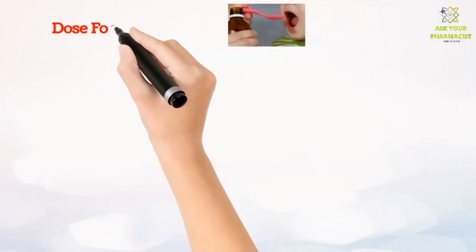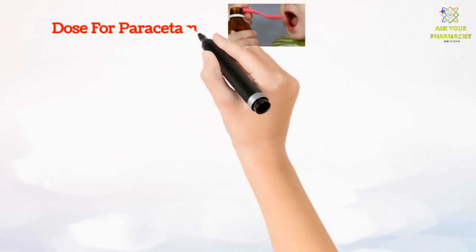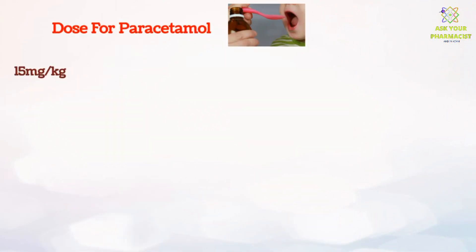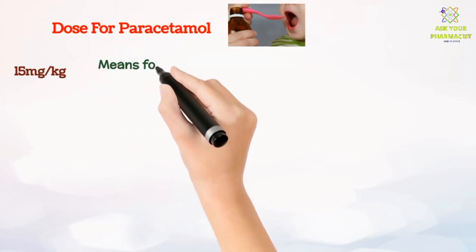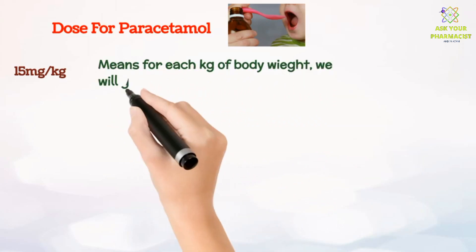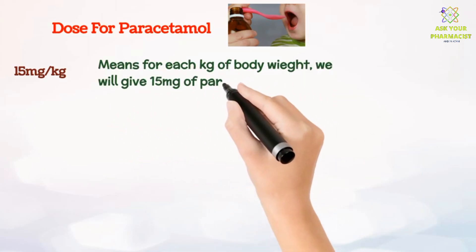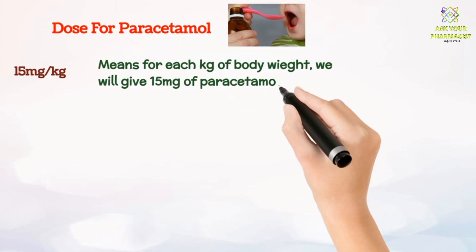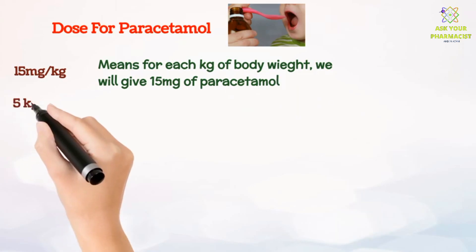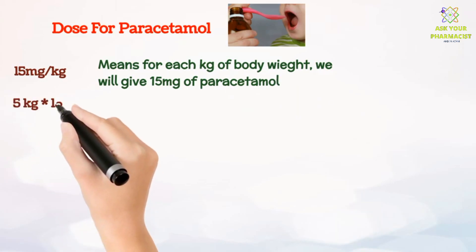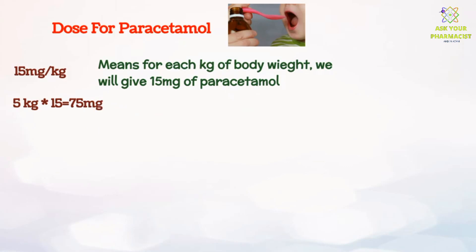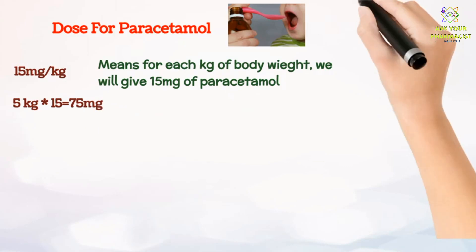The dose for paracetamol is calculated using the formula 15 mg per kg — meaning for each kilogram of body weight, we give 15 mg of paracetamol. For example, if body weight is 5 kg, then we will give 75 mg of paracetamol.